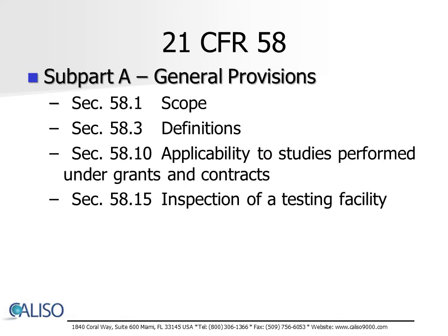The sections of 21 CFR 58 are as follows. Subpart A, General Provisions, which doesn't contain any requirements but includes the scope, definitions, applicability to studies performed under grants and contracts, and inspection of a testing facility, which simply states that an authorized employee of the FDA at reasonable times and in a reasonable manner may have the authority to inspect the facility.